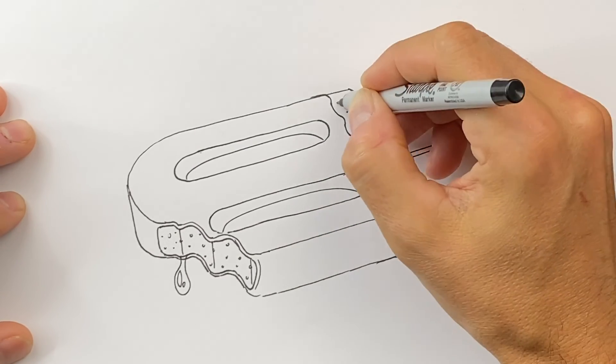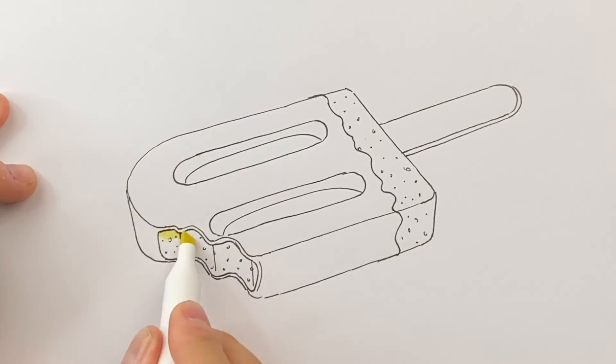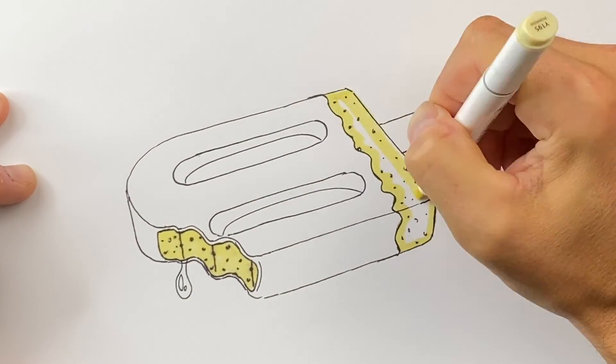Alright, so the next thing I'm gonna do is I'm gonna grab my markers and I'm gonna start coloring my popsicle in.